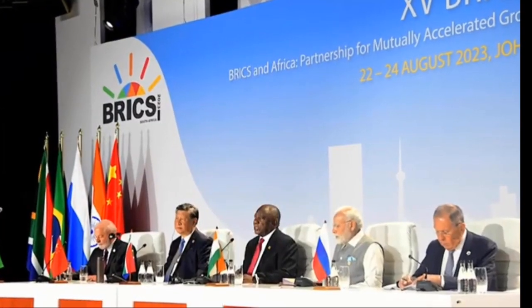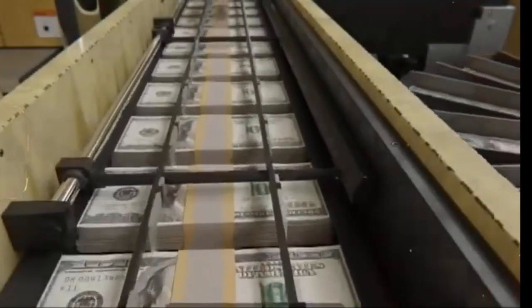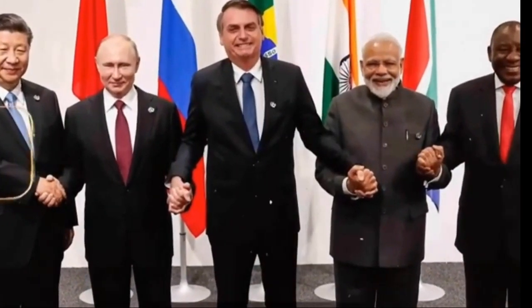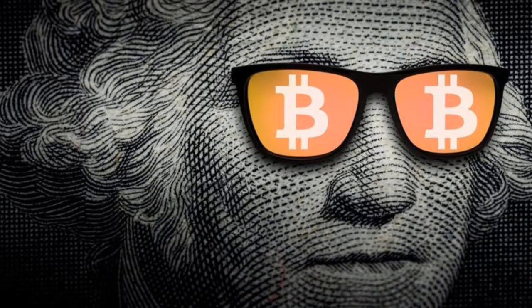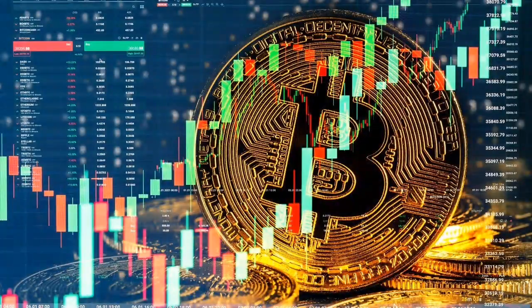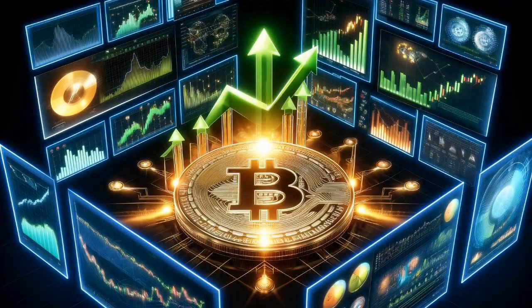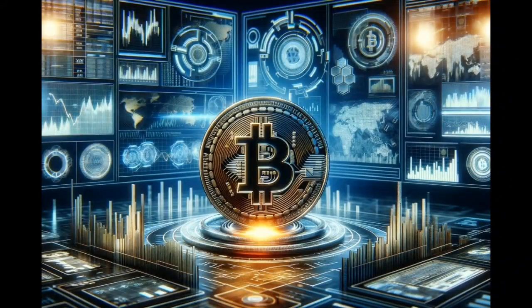Without a tangible asset, the intrinsic value of fiat currencies is essentially zero, a reality that might become more pronounced in the future. Furthermore, new countries joining the BRICS could significantly alter international geopolitics. If this new currency is backed by tangible goods, it could become a global economic standard. This scenario is more plausible if Bitcoin is taken into consideration, given its unique characteristics. Bitcoin is backed by electricity — a tangible asset — and it is disinflationary, meaning its new issuance is halved every four years during its halving events.